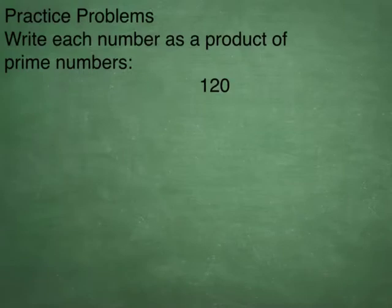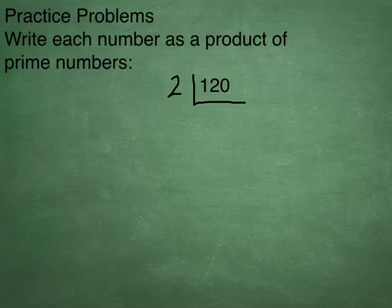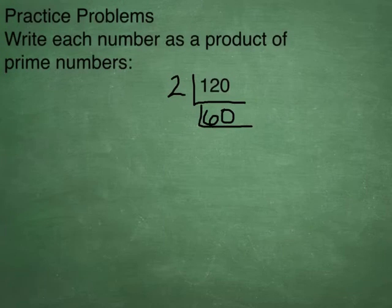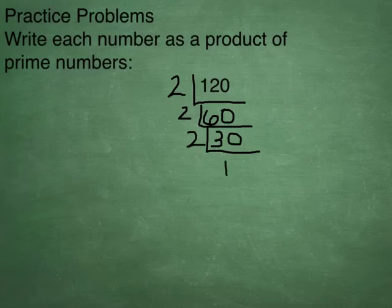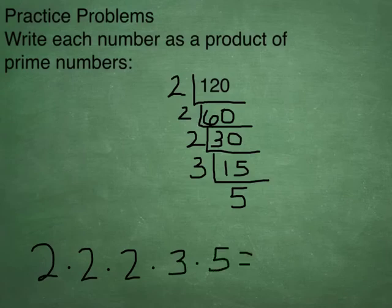Your practice problems: write each number as a product of primes, and we're going to break it down just like we did on the last couple of pages. Starting with 120: 2 will go into 120 — 2 goes into 12 six times, and into 60 thirty times, into 30 fifteen times. 2 won't go into 15, but 3 will: 3 times 5. So 2 times 2 times 2 times 2 times 3 times 5 equals 120.